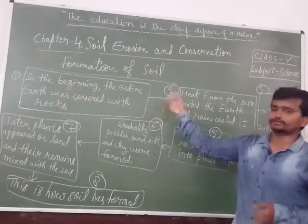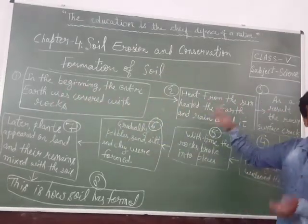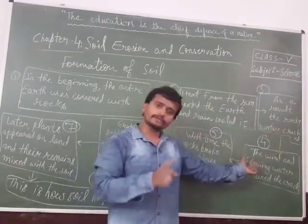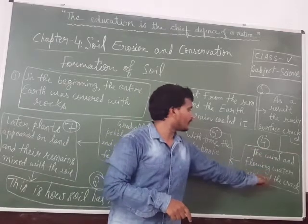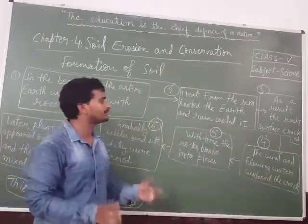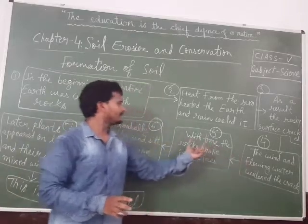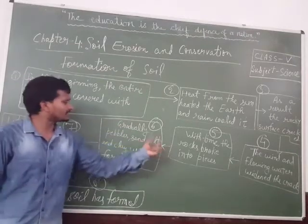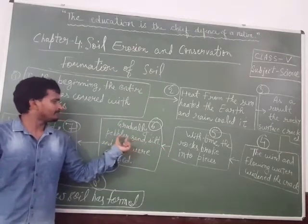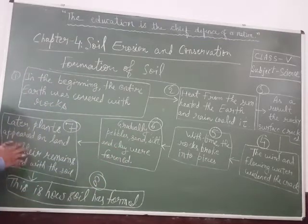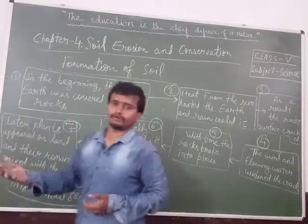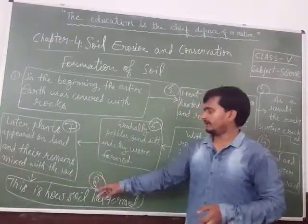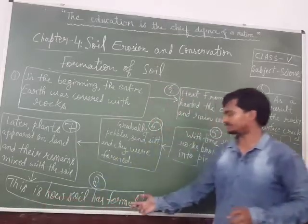So in summary, the entire earth was covered with rocks. Then heating and cooling acted on those rocks, the surface became cracked, and wind and flowing water widened the cracks. Rocks broke into pieces, gradually converting into sand, pebbles, silt and clay. Then plants appeared on earth's surface and their remains finally mixed with the soil, completing the formation of soil.